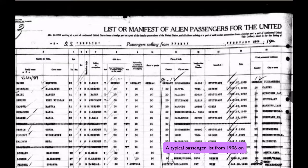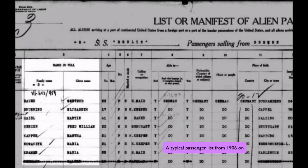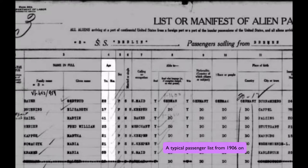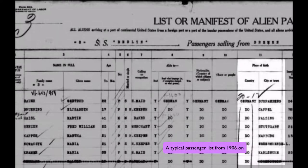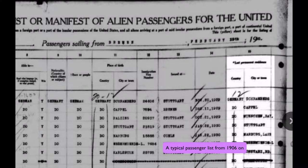Here's an example of a Passenger Arrival List. It gives the names of the passengers, their ages, and in this column their place of birth — the country and the city or town. And then in this column it gives their last permanent residence.